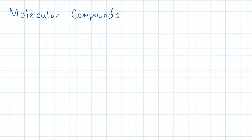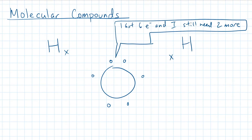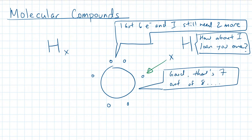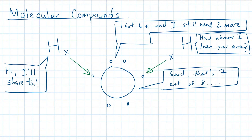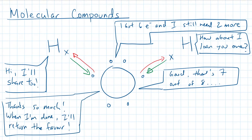When nonmetals bond together, they share their valence electrons to become chemically stable. This type of bond is known as a covalent bond, where electrons are periodically shared between all of the atoms. Covalent bonds usually result in the formation of individual molecules, or molecular compounds.